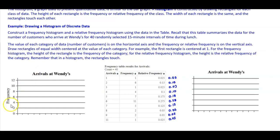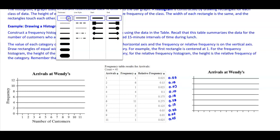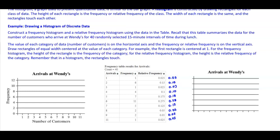Looking at the frequency histogram, the vertical axis shows frequency going from 0 to 12, because 12 is the highest frequency. On the horizontal axis we have the number of customers, going from 1 to 11. For number 1, the frequency is 1, so the first bar goes up to 1. For number 2, the frequency is 6, so the rectangle goes all the way up to 6. Remember the rectangles should touch.